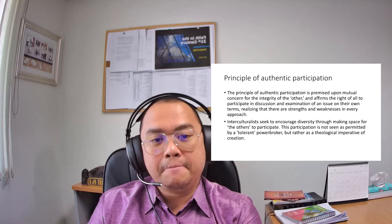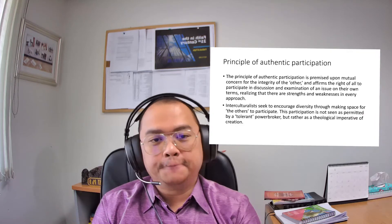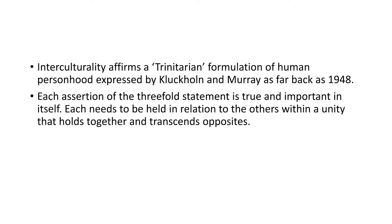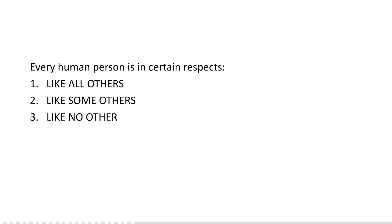Interculturality affirms a Trinitarian formulation of human personhood, expressed by Kluckhohn and Murray as far back as 1948. Each assertion of the threefold statement is true and important in itself, and each needs to be held in relation to the others within a unity that holds together and transcends opposites. Now, every human person — according to this trinity of understanding — is in certain respects like all others, like some others, and like no others. Everybody has these three characteristics.